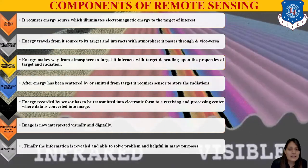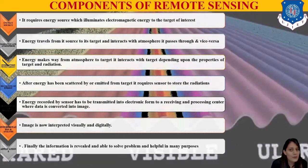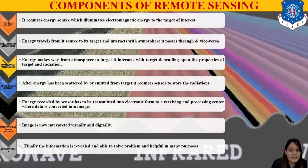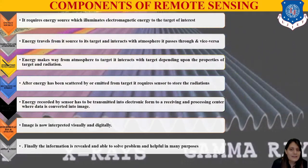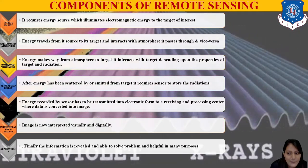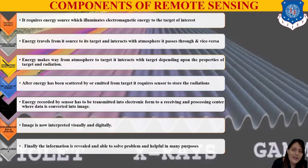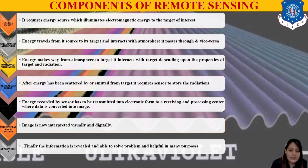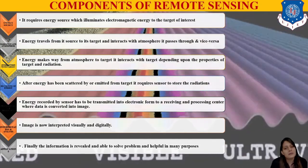The fourth component is recording of energy: after energy has been scattered by or emitted from the target, a sensor is required to store that radiation. The fifth is transmission and processing: energy recorded by the sensor is transmitted in electrical form to the antenna and receiving/processing center where data is converted. The sixth is interpretation and analysis: the image is interpreted visually by eyes and digitally using software.